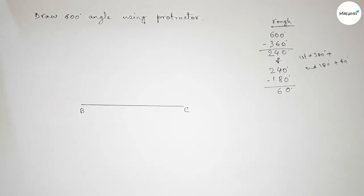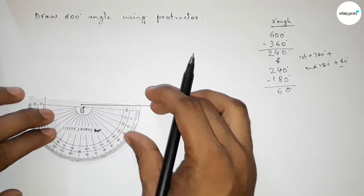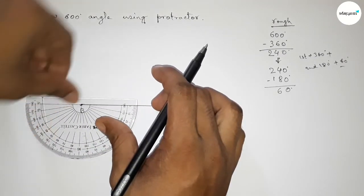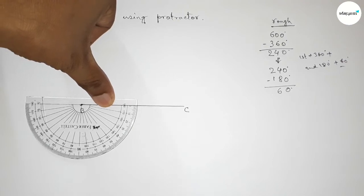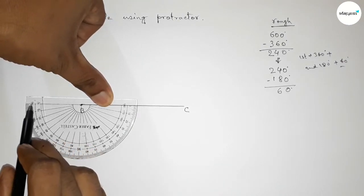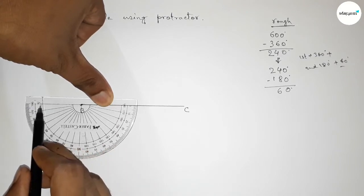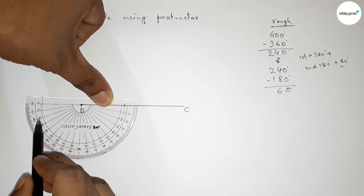First, we draw a 60-degree angle at point B using the protractor. Drawing a 60-degree angle here. This is 180 degrees on the protractor. Now counting 60 degrees—this is the 60-degree angle.